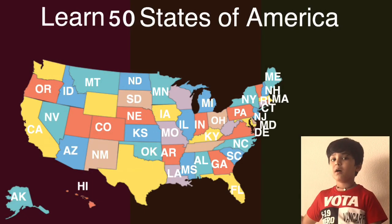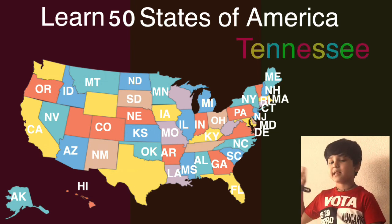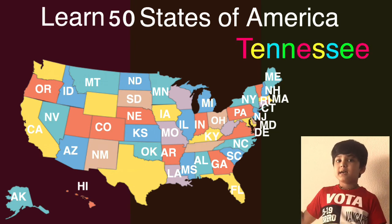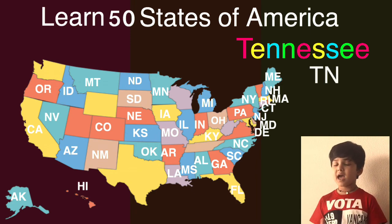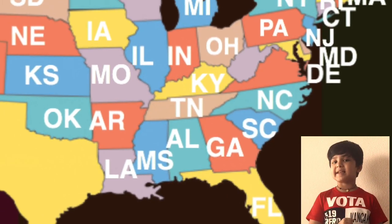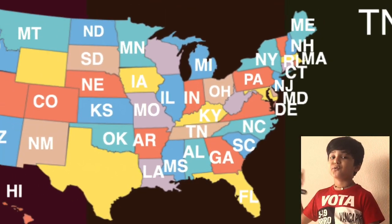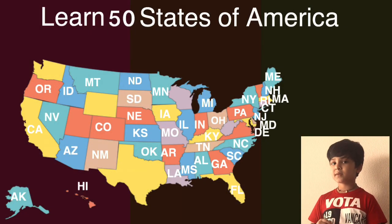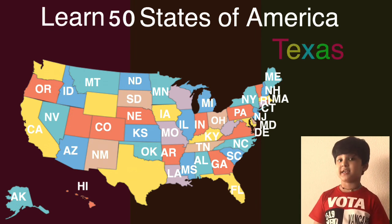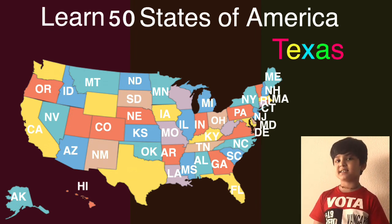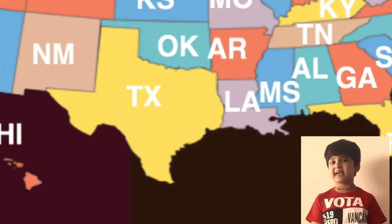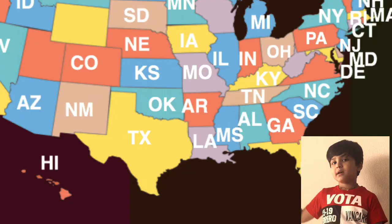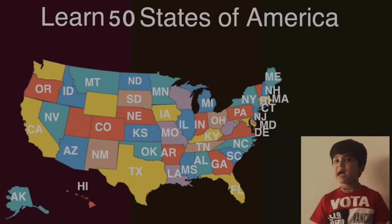The next one is Tennessee and the short one is TN. Here comes Tennessee on the map, can you guess what will come next? The next one is Texas and the short one is TX. Here comes Texas on the map, can you guess what will come next?